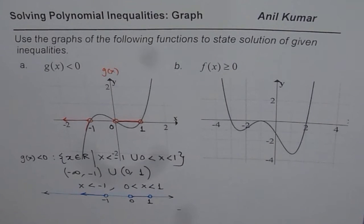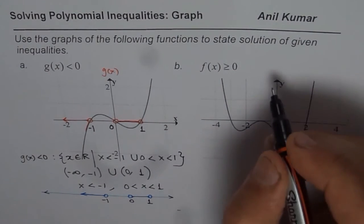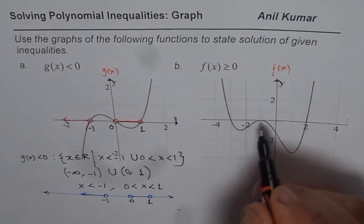Now let's look into the second graph. Here we have f of x is greater than or equal to 0, so this function is f of x for us, and that is the graph.